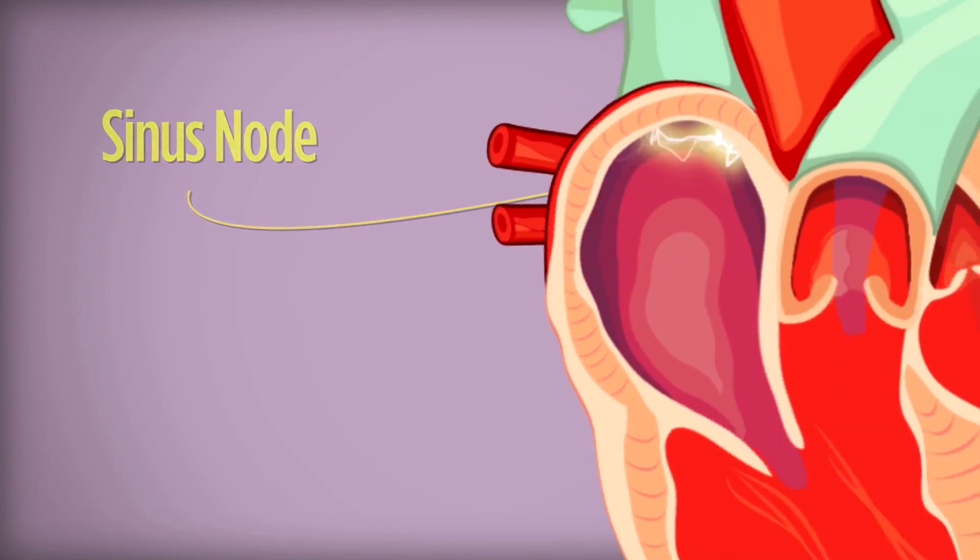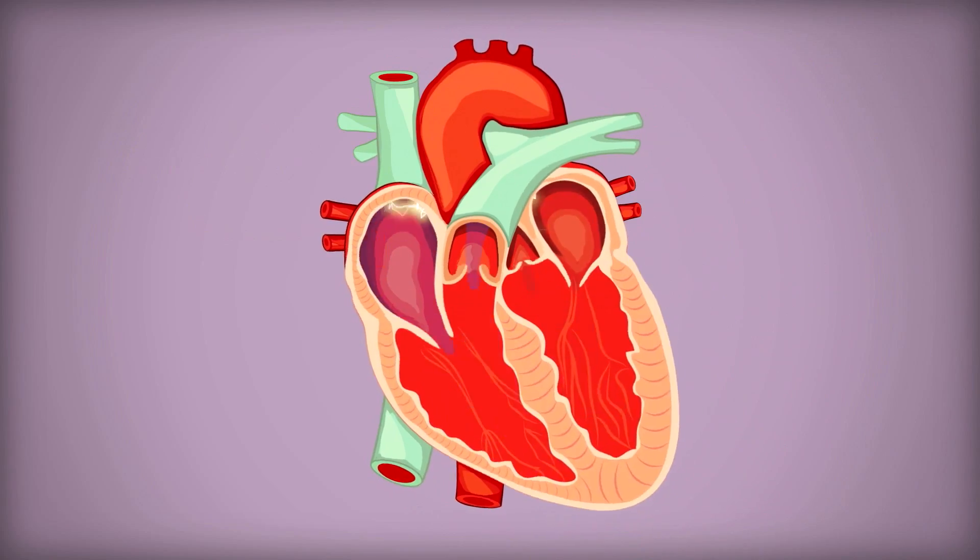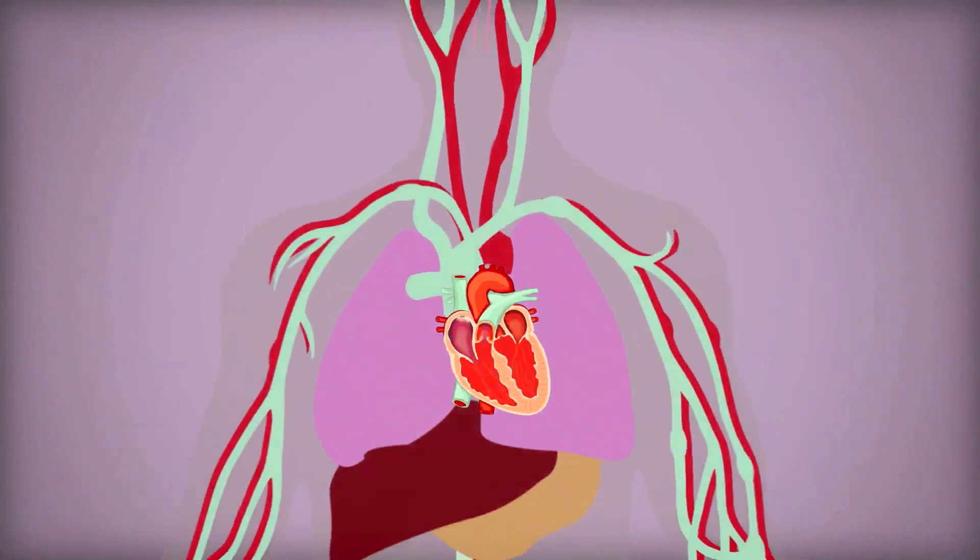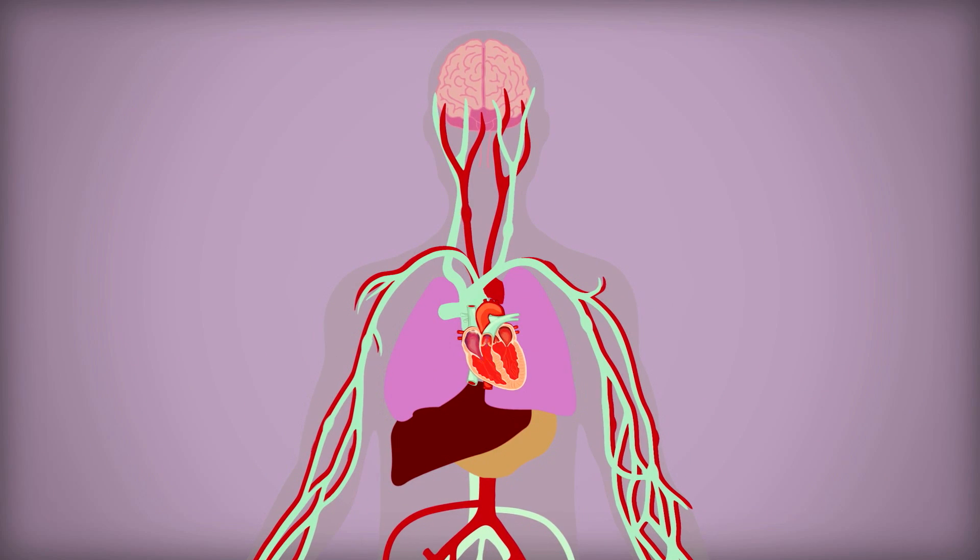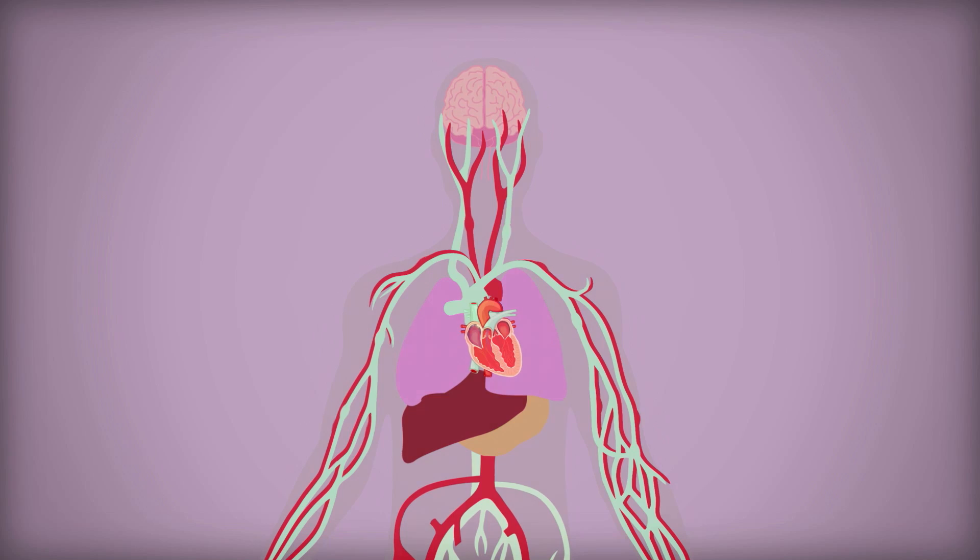The electrical impulse then spreads across the heart and tells it when and where to contract or squeeze. This synchronized heartbeat continuously circulates blood from the lungs through the heart and out to the rest of the body to deliver oxygen.